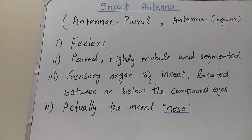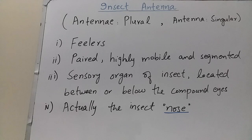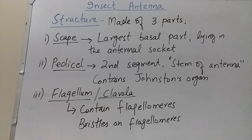Antennae can be defined as the sensory organs of insects, located below or between the compound eyes in the head region. Antennae are actually the insect's nose because they are used for the sense of smell, and also used for tactile and some other purposes.